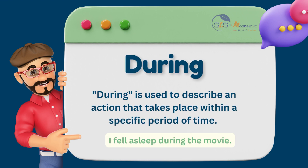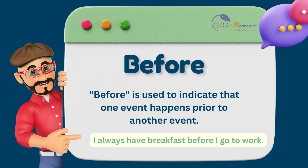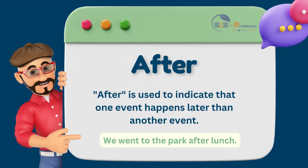'During' is used to describe an action that takes place within a specific period of time. For example, 'I fell asleep during the movie' means that you fell asleep at some point while the movie was playing. 'Before' is used to indicate that one event happens prior to another event. For example, 'I always have breakfast before I go to work' means that you eat breakfast first and then go to work. 'After' is used to indicate one event happens later than another event. For example, 'we went to the park after lunch' means that you ate lunch first and then went to the park.